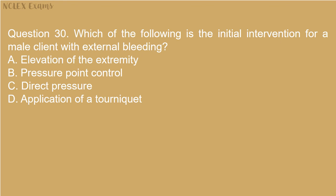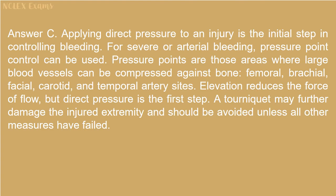Question 30: Which of the following is the initial intervention for a male client with external bleeding? A) Elevation of the extremity. B) Pressure point control. C) Direct pressure. D) Application of a tourniquet. Answer C: Applying direct pressure to an injury is the initial step in controlling bleeding. For severe or arterial bleeding, pressure point control can be used at areas where large blood vessels can be compressed against bone, such as femoral, brachial, facial, carotid, and temporal artery sites. Elevation reduces the force of flow, but direct pressure is the first step. A tourniquet may further damage the injured extremity and should be avoided unless all other measures have failed.